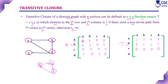For vertex D: D to A, there is a direct path — represent as 1. D to B, there is no direct path, but through A there is a path — represent as 1. D to C, there is a direct path — represent as 1. D to D: through A and B there is a path — represent D to D as 1.